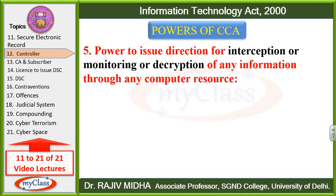Controller ke paas is baat ki power hai ki woh direction de sake ki kisi bhi jaati hui information ko roka jaaye. Kisi ke computer ke upar agar koi information hai, usko monitor kiya jaaye, watch kiya jaaye, ya usko decode kar diya jaaye — is baat ki directives controller de sakta hai.